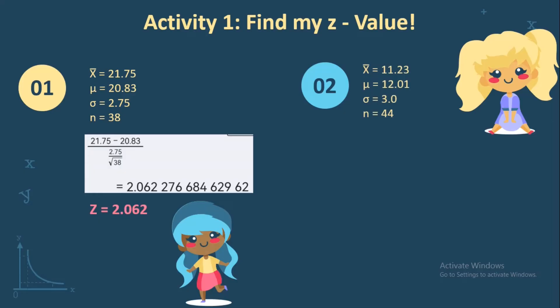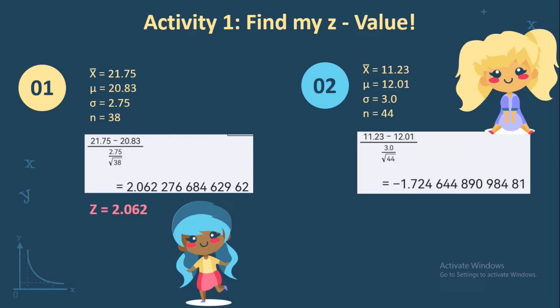Now let us move to number 2. The sample mean is 11.23, the population mean is 12.01, the population standard deviation is 3.0, and the sample size is 44. So: 11.23 minus 12.01 over 3.0 divided by the square root of 44. We get negative 1.724 and so on, and the final Z value is negative 1.725.